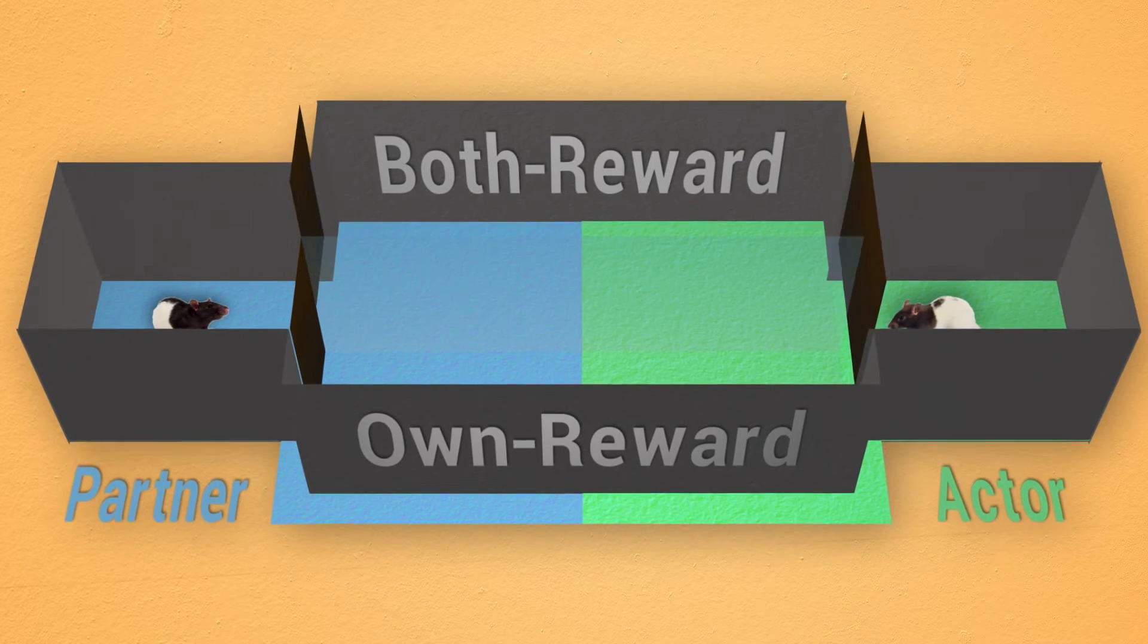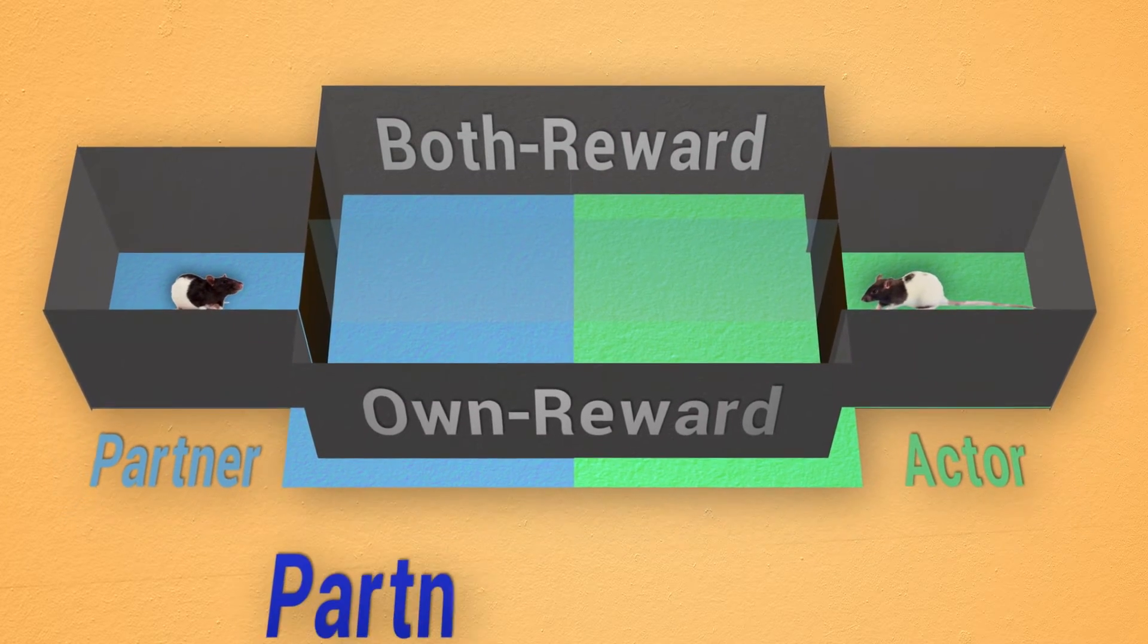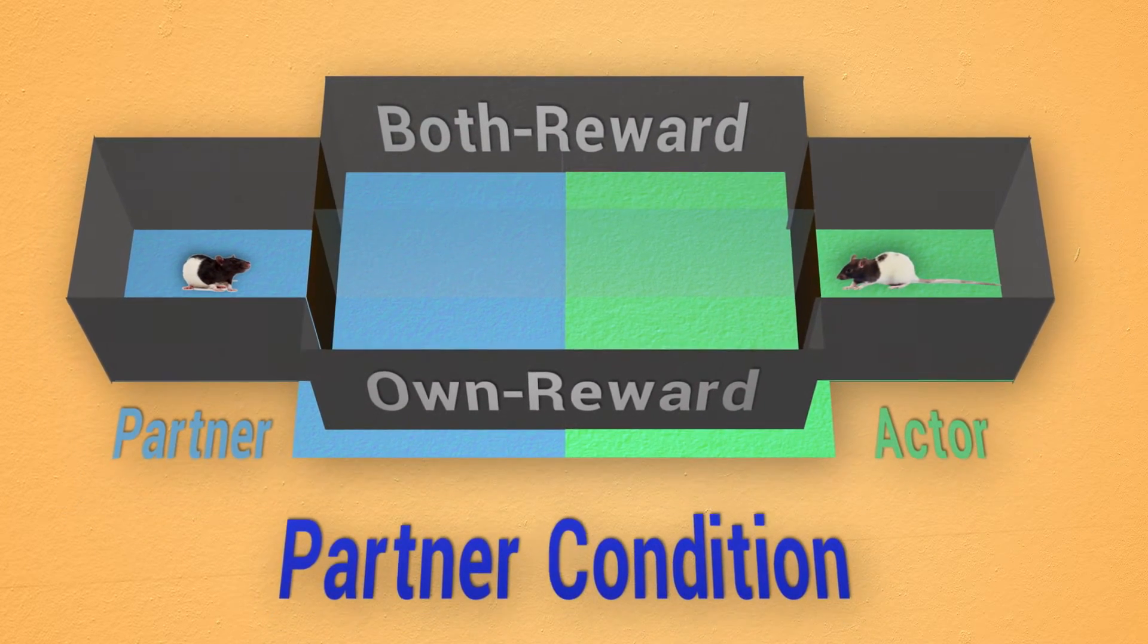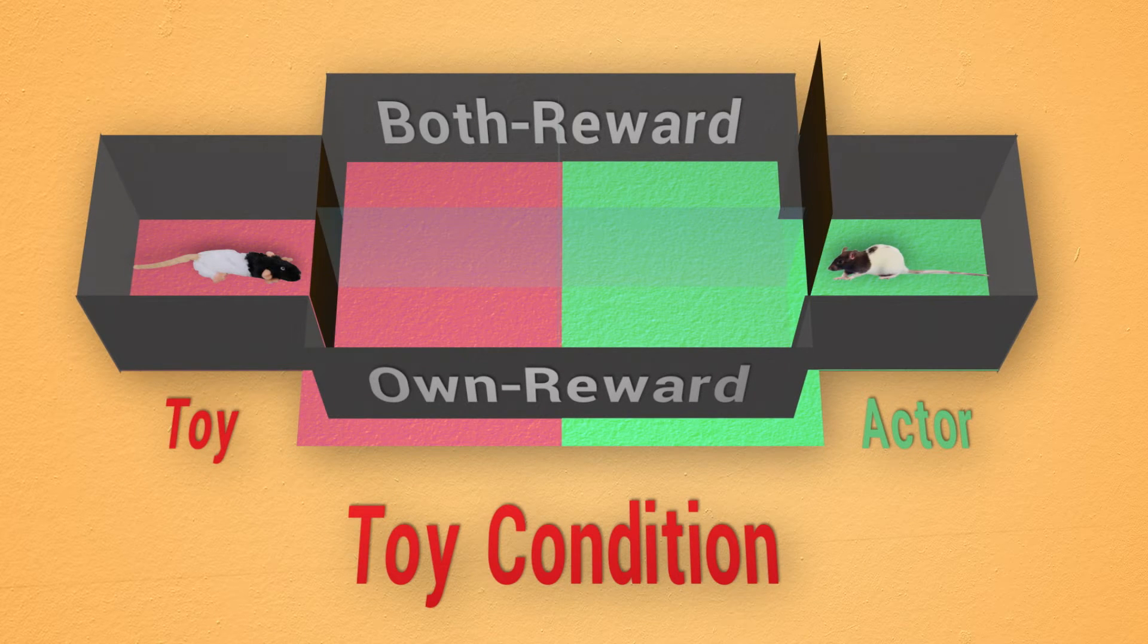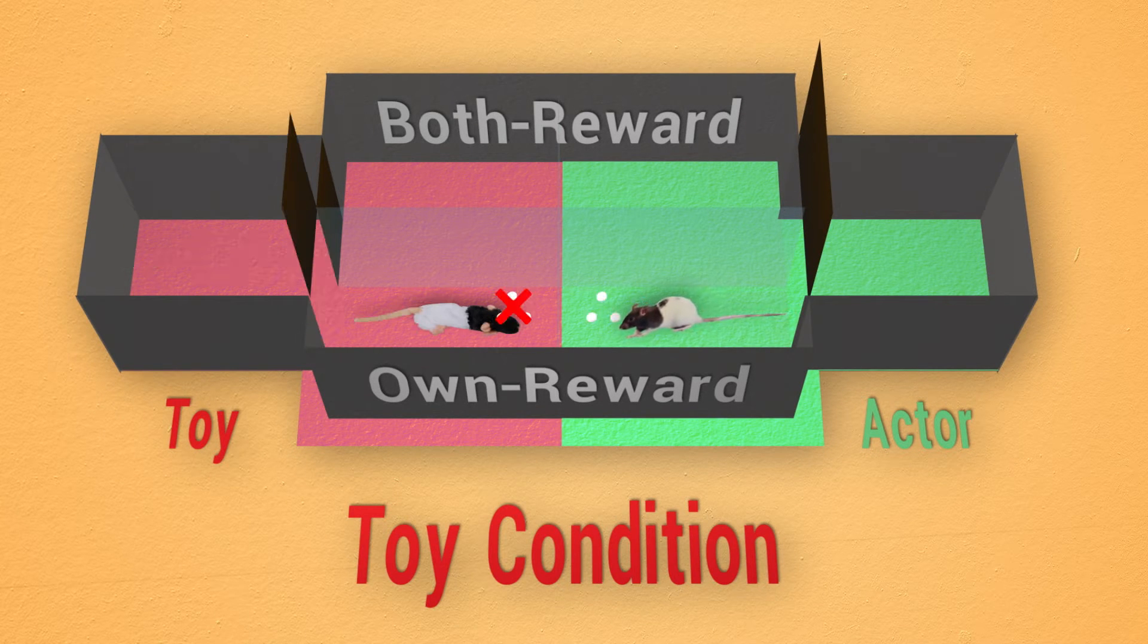All actors underwent both a partner condition where they were paired with a real rat partner, as well as a toy condition where an inanimate rat toy puppet was used instead, which served as a control for potential non-social motivational mechanisms.